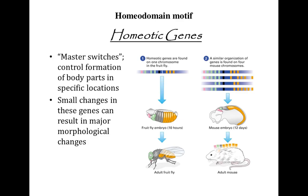Let's talk about homeodomain motifs. We discussed previously that homeodomain motifs are a specialized class of helix-turn-helix motifs. The major difference is that homeodomain motifs have three alpha helices rather than two. The name comes from homeotic genes, also called homeoselector genes. These genes are basically master switches that control the formation of body parts in different locations of living things. Here is an example of a fly embryo and here is an example of a mouse.